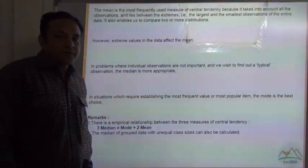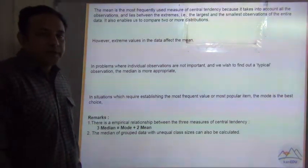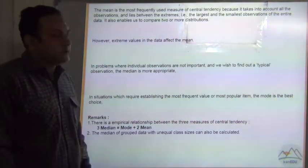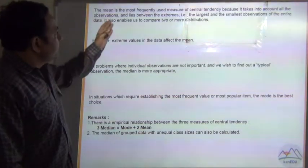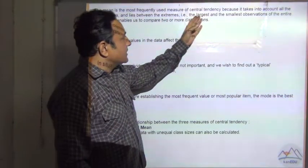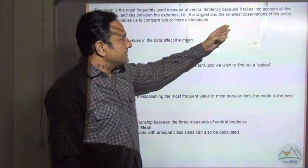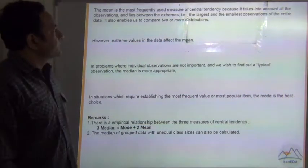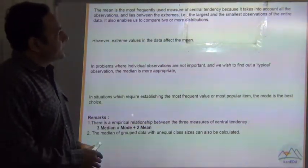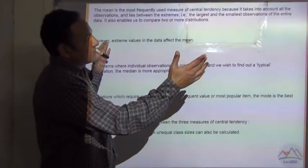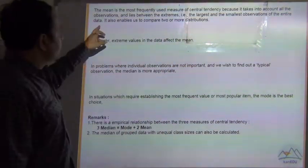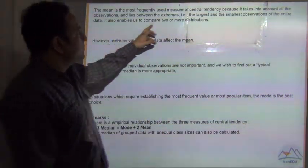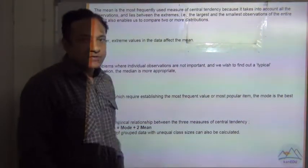Now let's recap what we have studied: mean, median, and mode, where they are used and why. The mean is the most frequently used measure of central tendency because it takes into account all observations and lies between the extremes, the largest and smallest observations. It also enables us to compare two or more distributions.